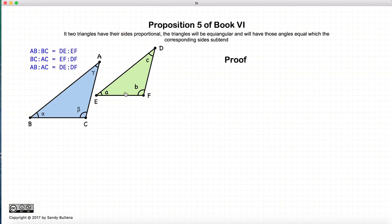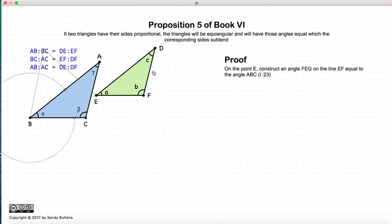So let's start with our proof. First thing we're going to do is on point E, we're going to construct an angle that is equal to ABC. In other words, this angle is alpha, that angle is alpha.